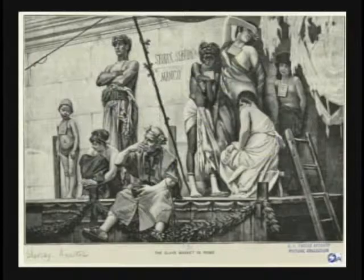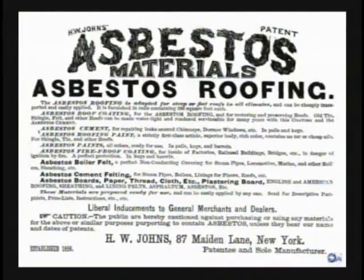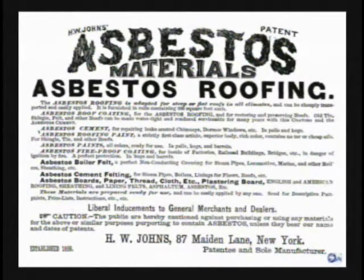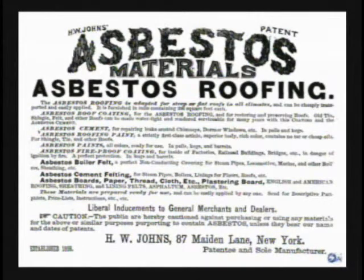In the industrial age that began in the 19th century, commercial asbestos products were first developed by H.W. Johns, who went on to found the asbestos corporate giant Johns Manville. Mr. Johns developed asbestos products just prior to the Civil War and went on to introduce the first major broad range of industrial use of asbestos in America.